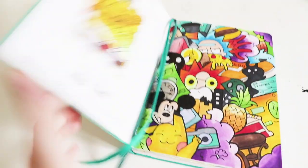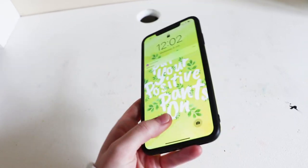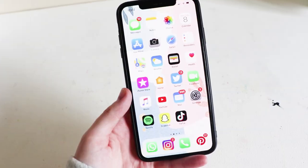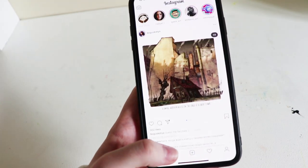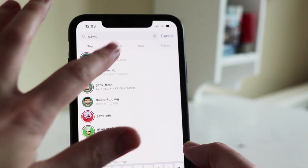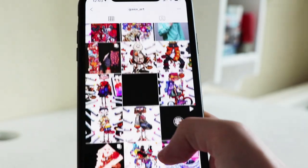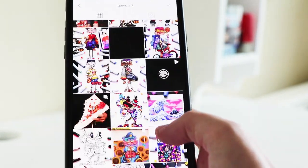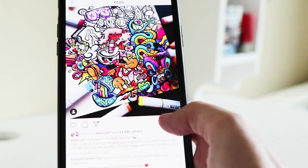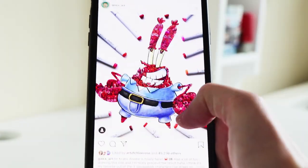The first step to doodling is to find some inspiration. So I've got my phone here and I'm just gonna go on Instagram. I do like to look at Gork's Art as he is super cool at doodling, and there's also Vex. I think it's great to look at other artists for inspiration, but obviously don't copy them exactly.